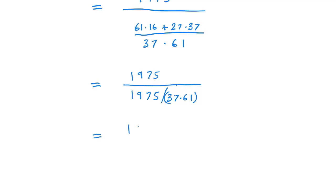1975 multiplied by 37 times 61 divided by 1975.